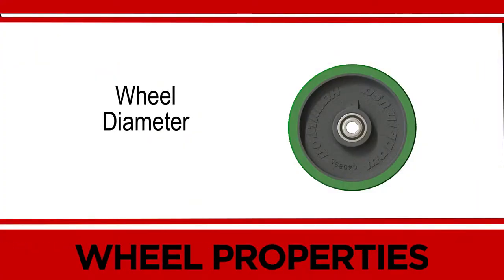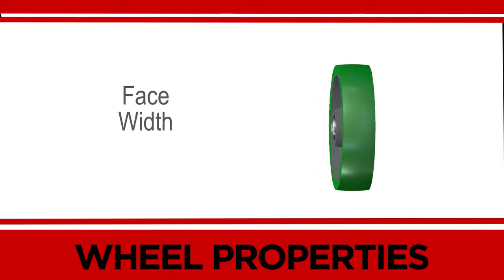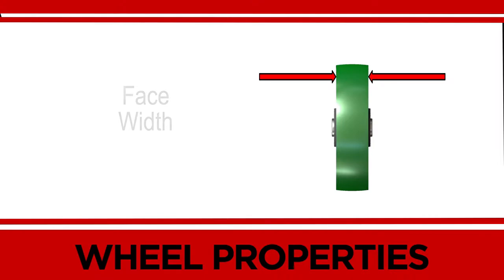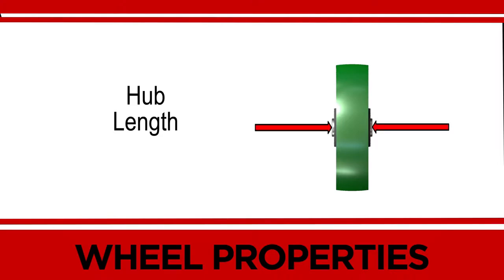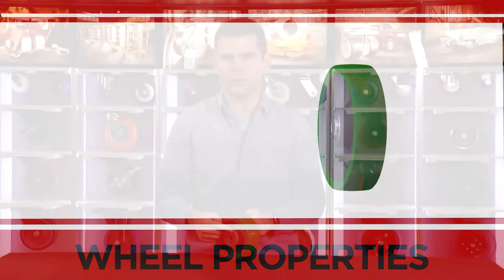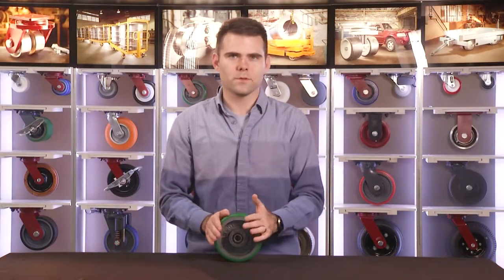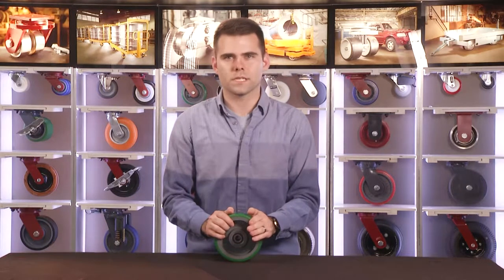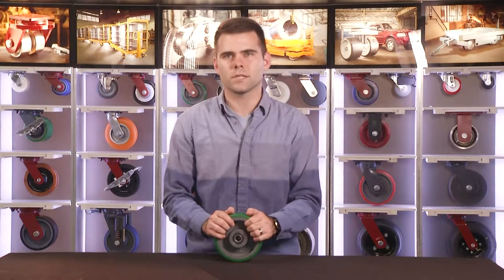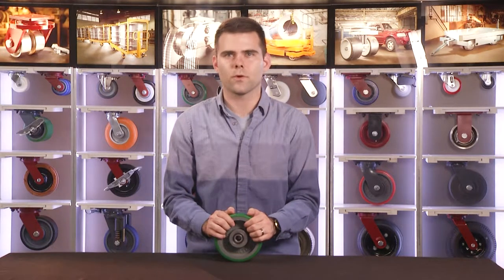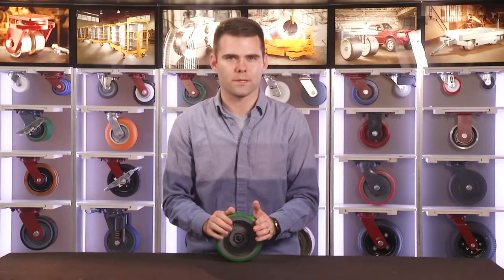The wheel diameter is simply the distance from the top to the bottom side of the wheel. Face width and hub length are also key dimensions — hub length is the widest part of the hub and is often wider than the wheel face. While many variables affect caster performance, the wheel's physical characteristics primarily determine how well the caster will perform in an application and environment.